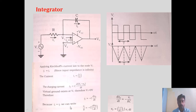Equating I1 and IF: VI/R = −C · dV0/dT. Rearranging by taking dV0/dT to the left, it becomes −VI divided by RC.